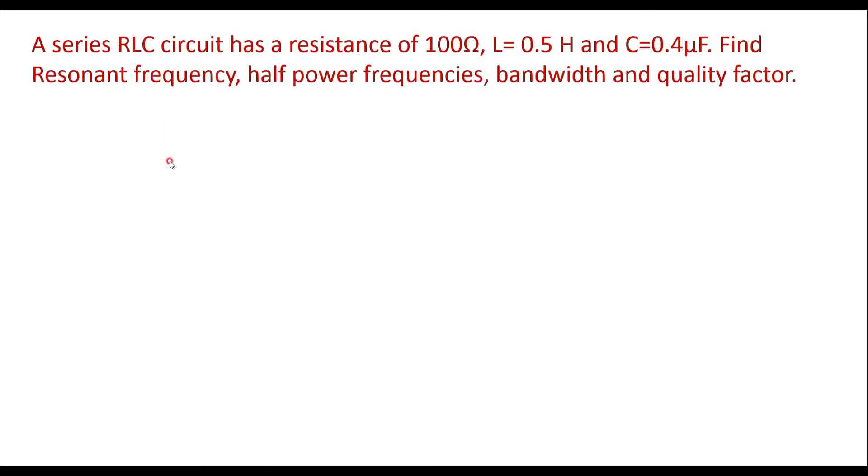Consider one example on series RLC circuit. A series RLC circuit has a resistance of 100 ohm, L is equal to 0.5 Henry and C is equal to 0.4 microfarad. Find resonant frequency, half power frequencies, bandwidth and quality factor.